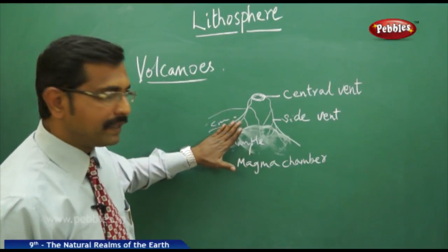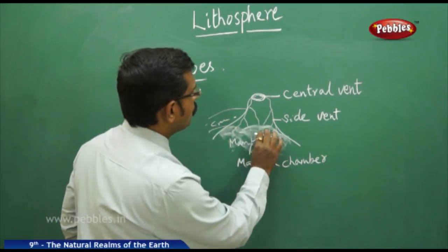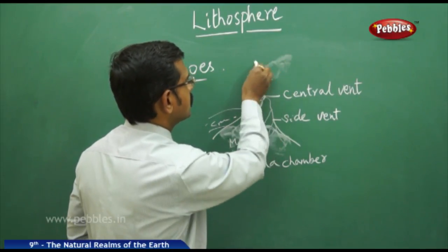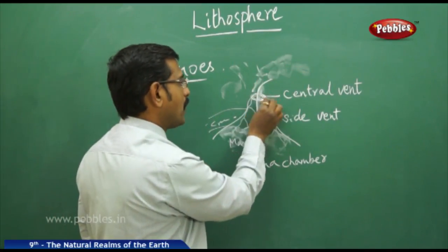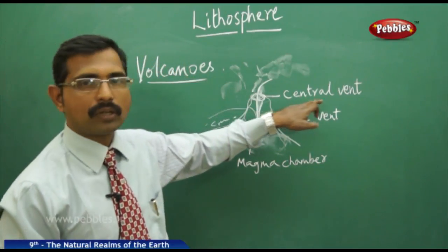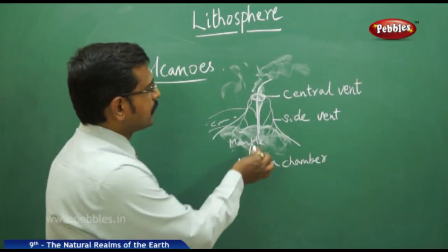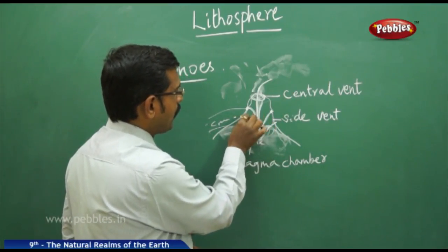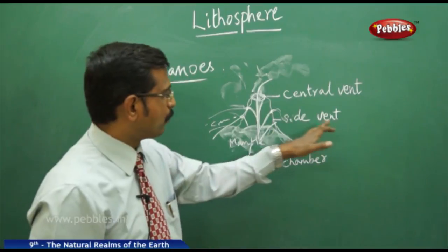From the mantle side, the molten rock material, which is very very hot, pours out in the form of lava — sometimes as ashes, sometimes as small fog. The central part where lava erupts vertically is called the central vent. From the sides, where you find weak cracks, some magma also erupts from what are called side vents.